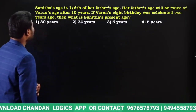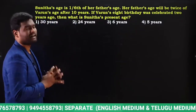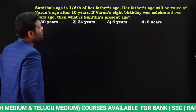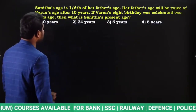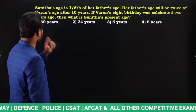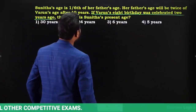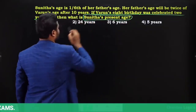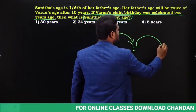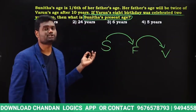Next question: Sunita's age is 1/6 of her father's present age. After 10 years, her father's age will be twice Varun's age. Varun's eighth birthday was celebrated two years ago. Find Sunita's present age. To solve: first find Varun's age, then use it to find father's age, and finally find Sunita's age.